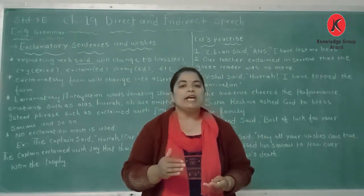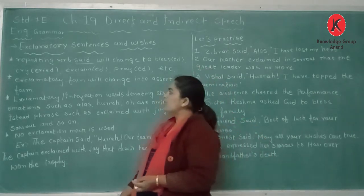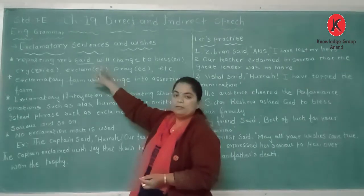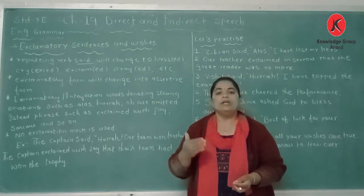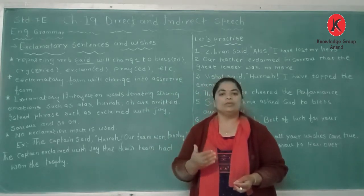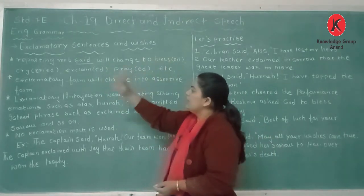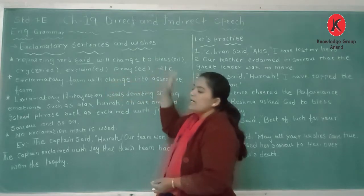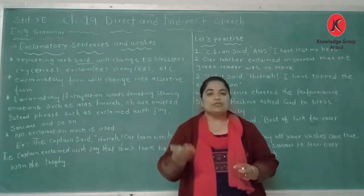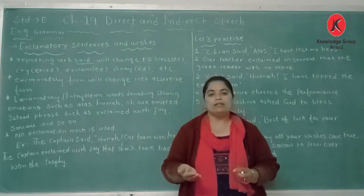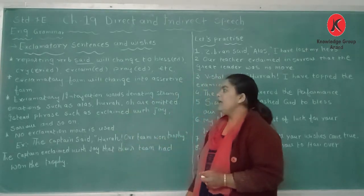So, how to change from direct to indirect speech in exclamatory sentences — the rules are as follows. Reporting verb 'said': from the beginning of our lesson, we have been learning that the reporting verb is always 'said.' The reporting verb 'said' will change to 'blessed,' 'cried,' 'exclaimed,' 'prayed,' etc. There are many other strong-feeling words which we can use in exclamatory sentences when we change into indirect speech.